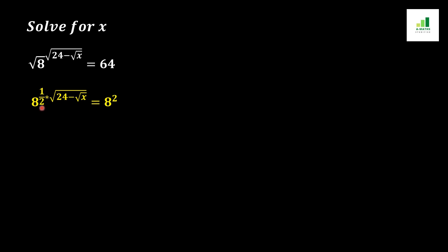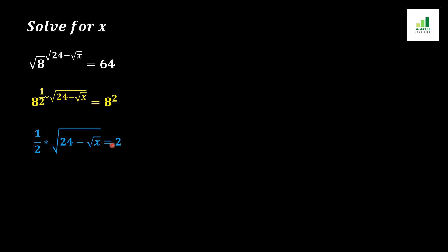Now we apply the basic rule of algebra: if two bases are equal in magnitude, their powers are also equal. Applying this rule, we get (1/2)(√24 − √x) = 2. In the next step, the 2 in the denominator moves to the other side and multiplies, giving us √(24 − √x) = 4.